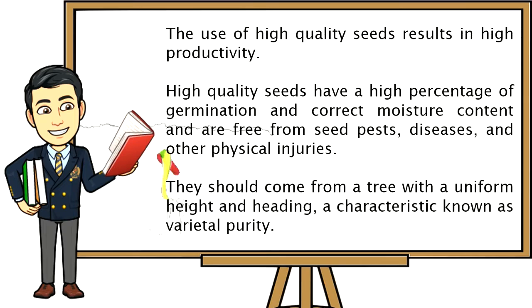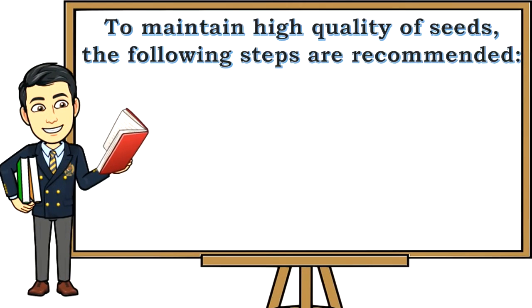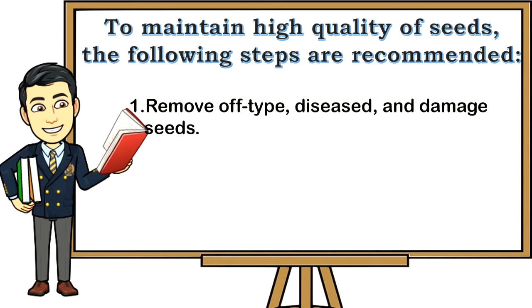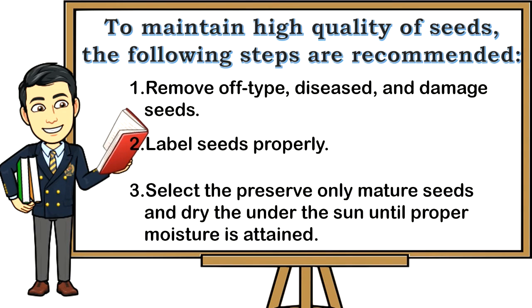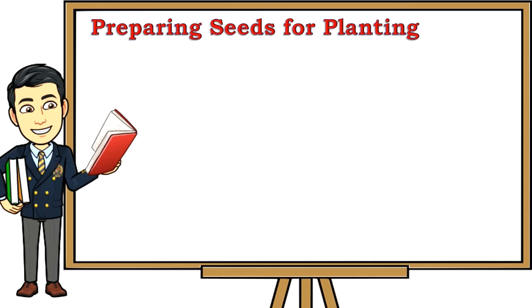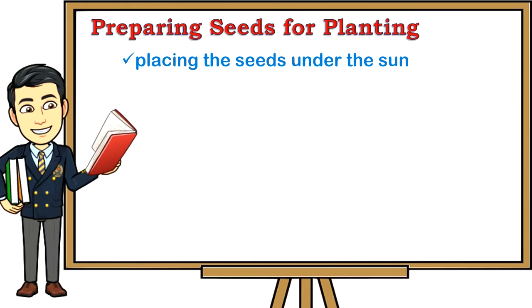High-quality seeds should come from a tree with uniform height and heading — a characteristic known as varietal purity. To maintain high-quality seeds, the following steps are recommended: one, remove off-type, diseased, and damaged seeds; two, label seeds properly; three, select and preserve only mature seeds and dry them under the sun until proper moisture is attained. One way of preparing seeds for planting is by placing them under the sun before planting.